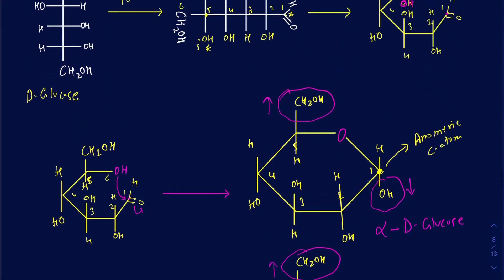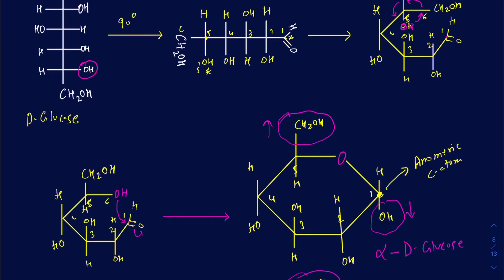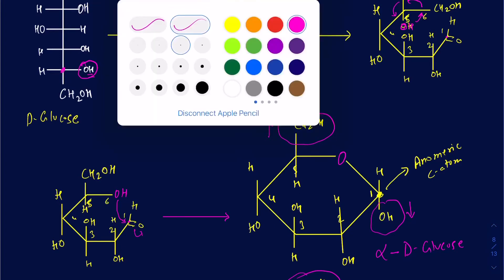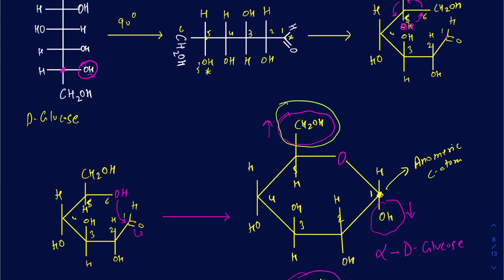Remember, we started off with D-glucose because the last chiral hydroxyl group at the last chiral carbon is on the right side — that's how you know it's D-glucose. If you're given a Haworth projection, you can easily tell if it's a D-sugar or L-sugar by the position of your CH2OH group. If CH2OH is pointed up, it's a D-sugar. If CH2OH is pointed down, it would be an L-sugar.